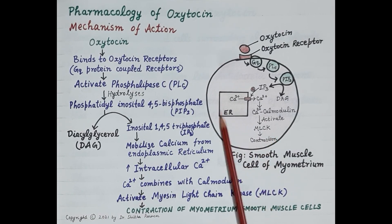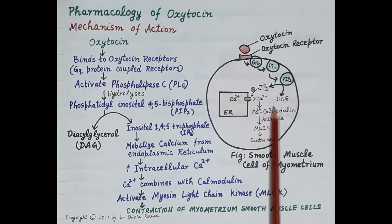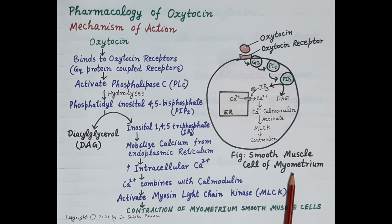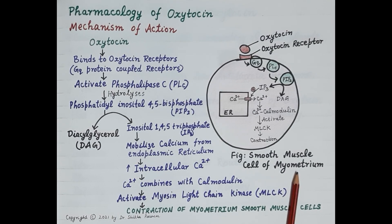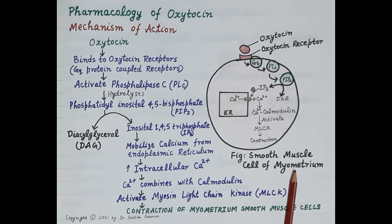Now let's understand the mechanism of action of oxytocin. This diagram shows a smooth muscle cell of the myometrium. The myometrium is a tissue layer made up of smooth muscle cells and forms the wall of the uterus. Contraction of the myometrium contracts the uterus.